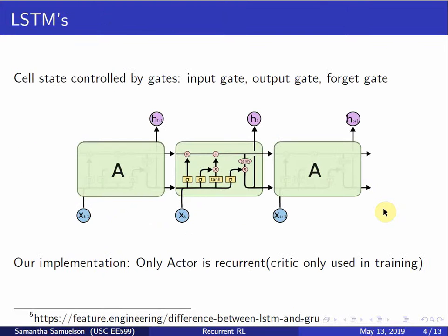For this example, we're going to be using LSTMs. As a quick reminder, LSTMs have an internal state variable that is updated as the input from the system changes. This allows them to incorporate a memory of the inputs seen before to affect the output, which makes them ideal for compensating for missing velocity information.